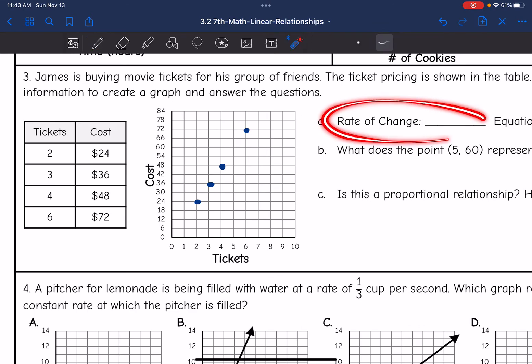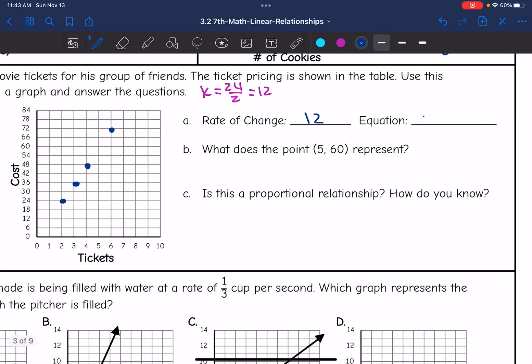So now it's asking me to find the rate of change. So I just need to do y divided by x. I'll do it with this first ordered pair of 2, 24. So to find k, I will do 24 divided by 2, which is 12. So that means the rate of change is 12. And the equation would be y equals 12x.